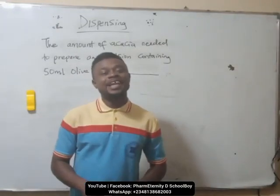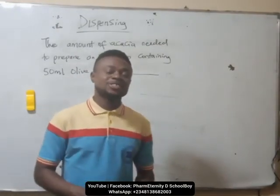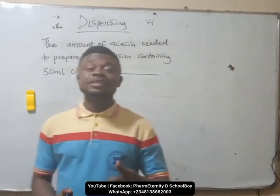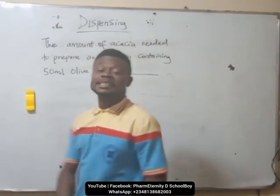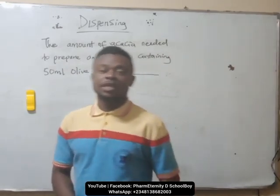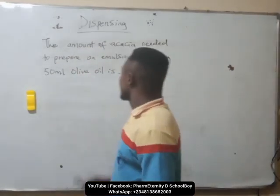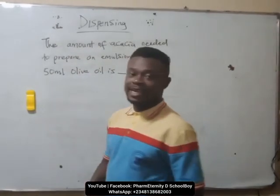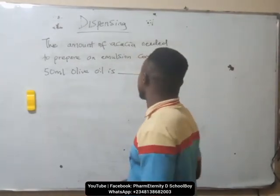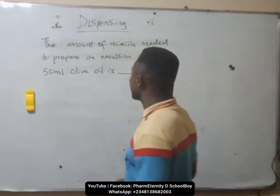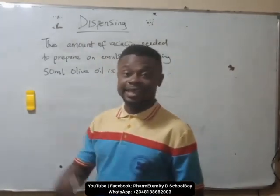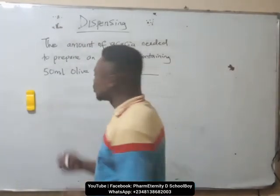Welcome to online lectures with From Eternity the School Boy. Today we are going to take a look at dispensing, and we have a question on the board. The question says: the amount of acacia needed to prepare an emulsion containing 50 ml olive oil is dash. Solution.